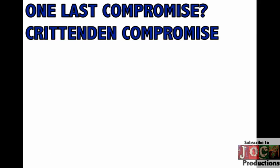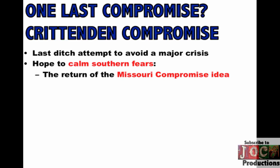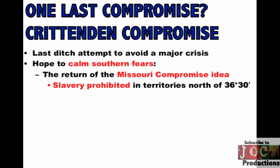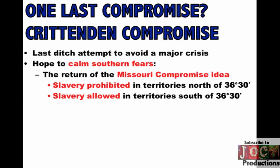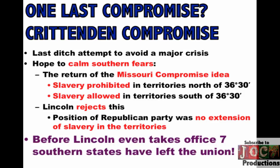There is one last attempt at compromise: the Crittenden Compromise. It is an attempt to avoid a major crisis and calm Southern fears, with a really simple idea — return to the Missouri Compromise line at 36°30'. Slavery would be prohibited in territories north of that line and allowed in territories south. But ultimately, Lincoln and the Republican Party reject this because their 1860 platform was no extension of slavery in the territories. And of course, seven Southern states will have left the Union before Lincoln even enters the White House.